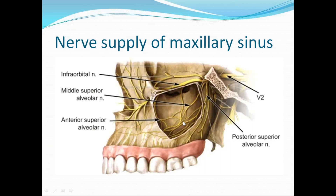The blood supply of the maxillary sinus is from the anterior, posterior, and middle superior alveolar branches of the maxillary artery. The nerve supply is from the anterior, middle, and posterior superior alveolar nerves — branches of the maxillary nerve. The lymphatic drainage goes to the submandibular lymph nodes. The maxillary sinus is the most clinically important sinus and can be asked as a separate 5-mark question.